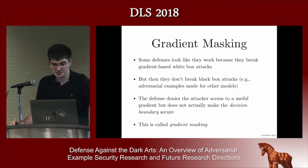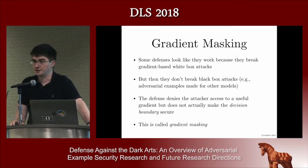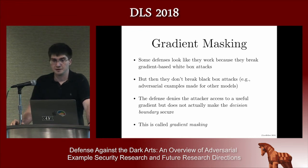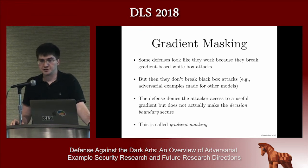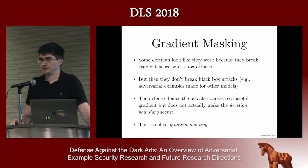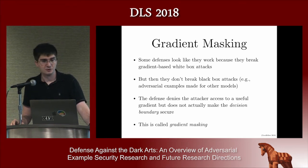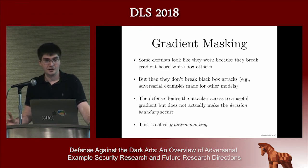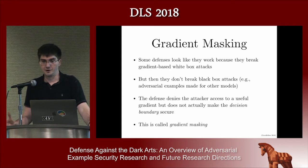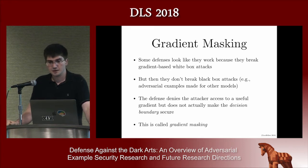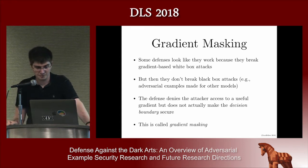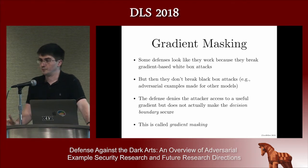A lot of defenses are based on a principle called gradient masking. The idea is that all these attack algorithms use gradient-based optimizers to search for inputs that fool the model — what if we could break the optimizer by hiding the gradient, turning it into zero, or making it point in random or useless directions? In general, this is called gradient masking because these defenses break the optimizer but don't actually make the model more robust. If there was an input point that was misclassified before, it is often still misclassified by a defense using this approach.